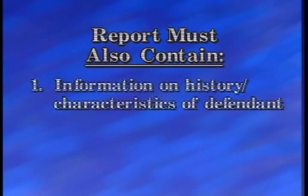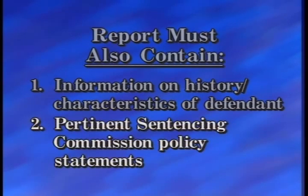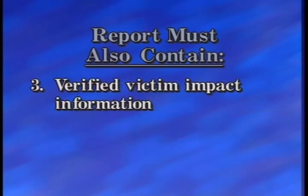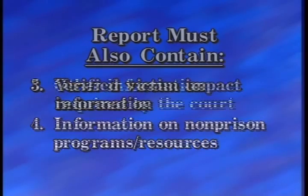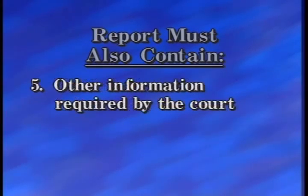Rule 32 also requires the probation officer's report to contain information about the history and characteristics of the defendant, any pertinent policy statement issued by the Sentencing Commission, verified information assessing the impact of the offense on the victim, information concerning the nature and extent of non-prison programs and resources available for the defendant, unless the court orders otherwise, and any other information required by the court.